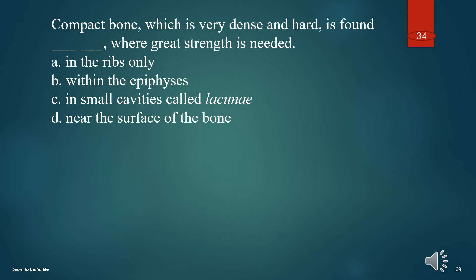Compact bone, which is very dense and hard, is found in what, where great strength is needed? A. In the ribs only. B. Within the epiphysis. C. In small cavities called lacunae. D. Near the surface of the bone. The answer is D. Near the surface of the bone.